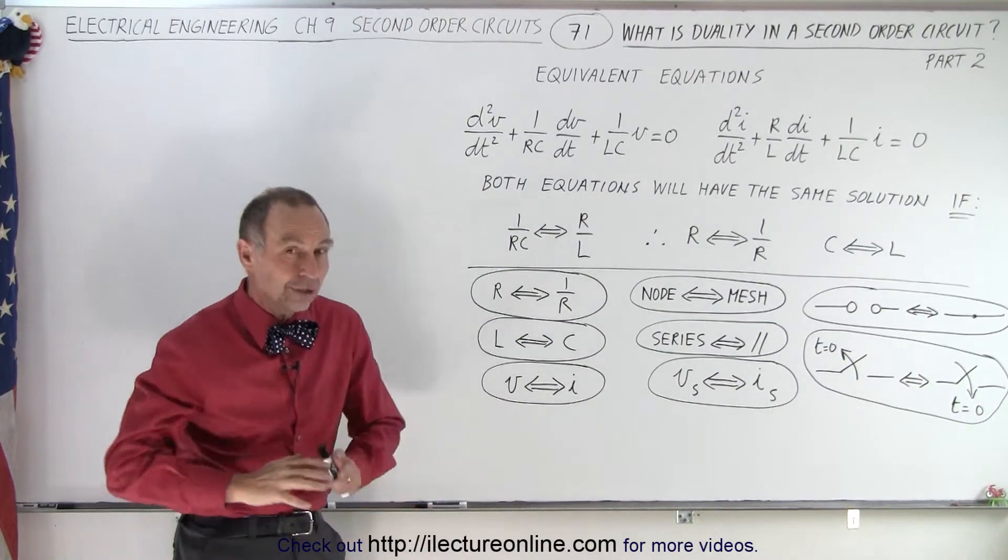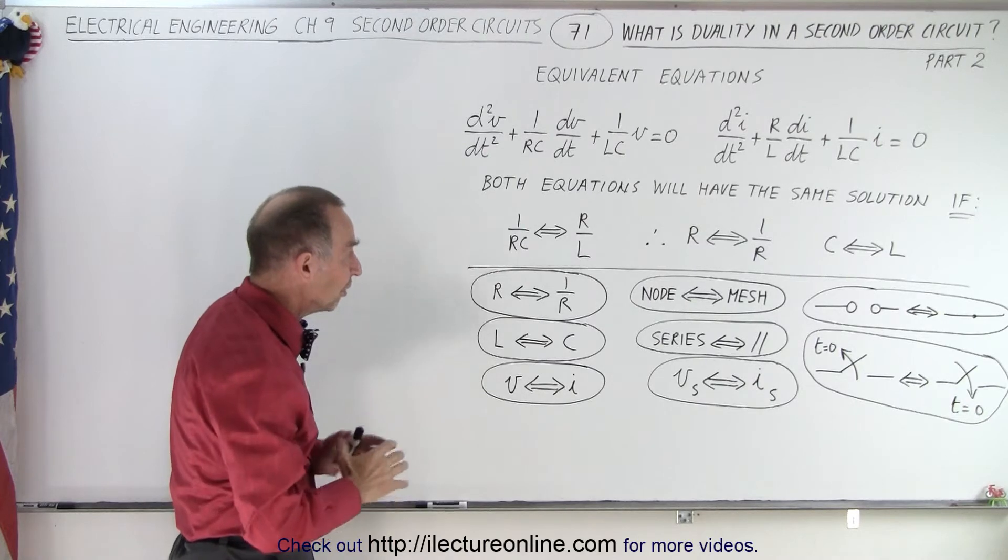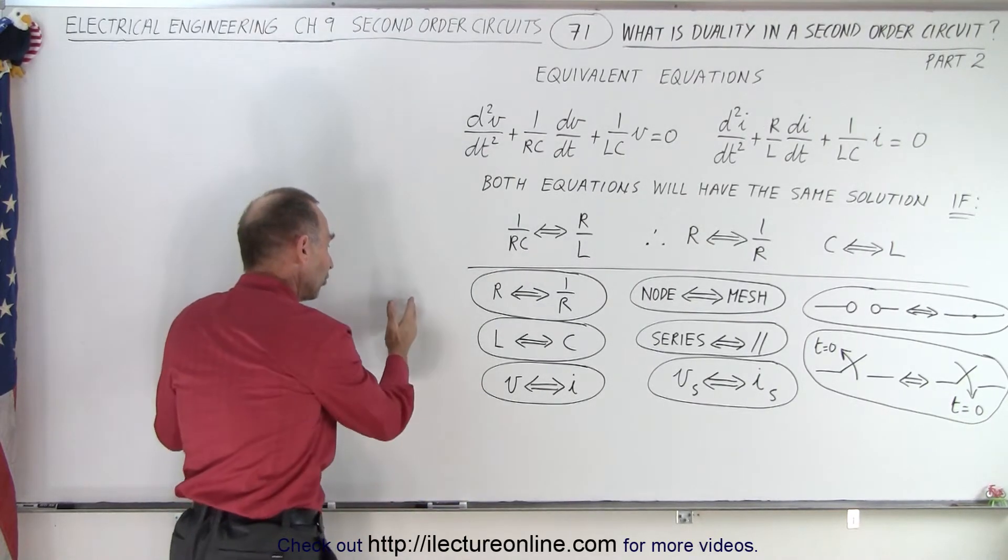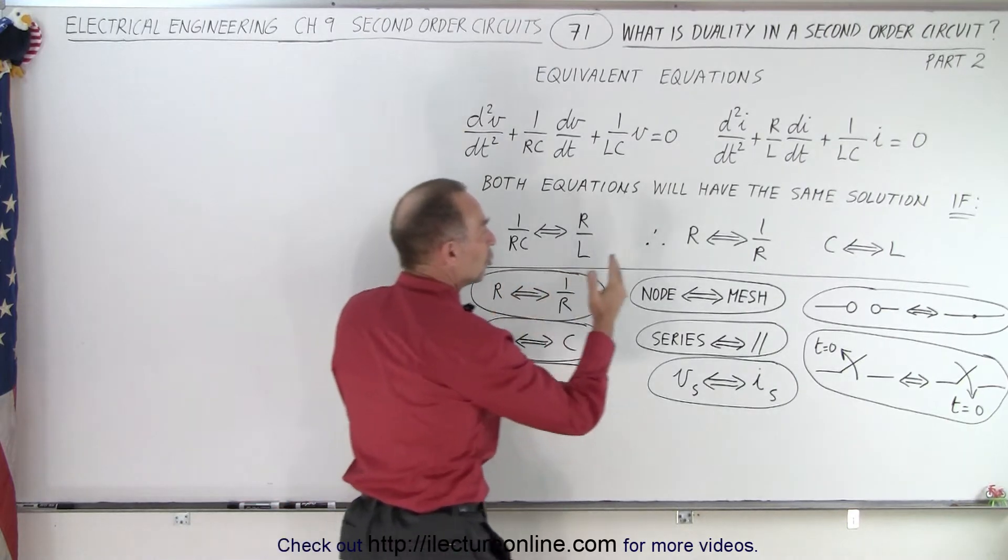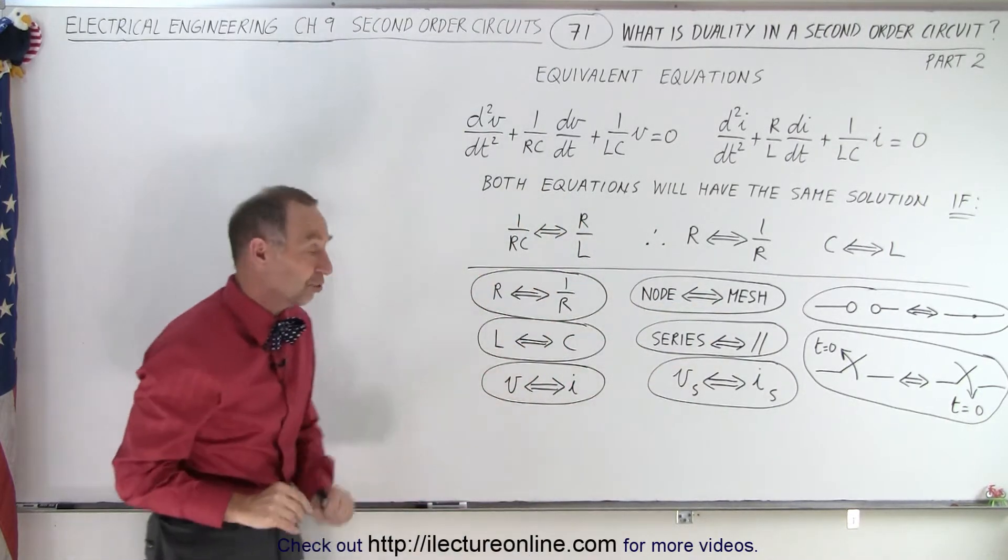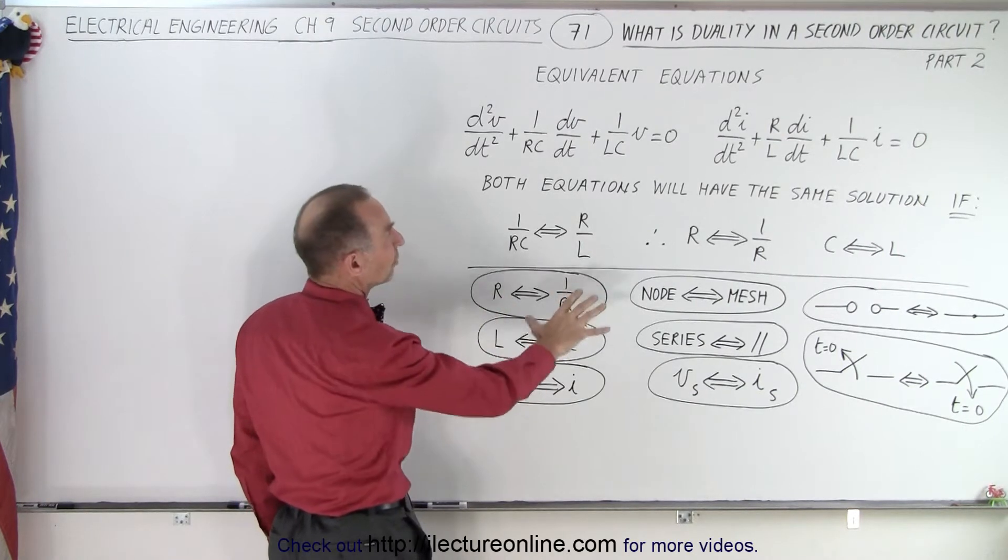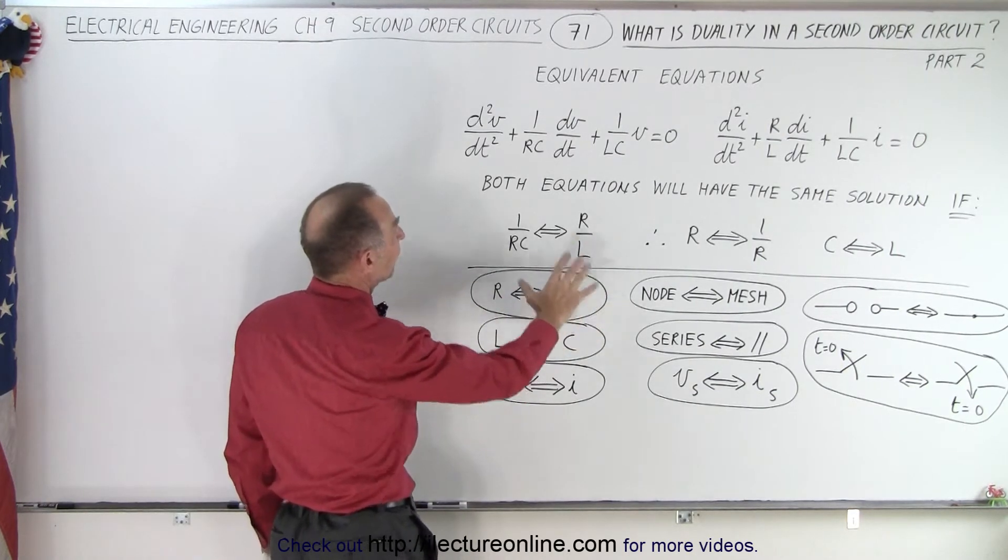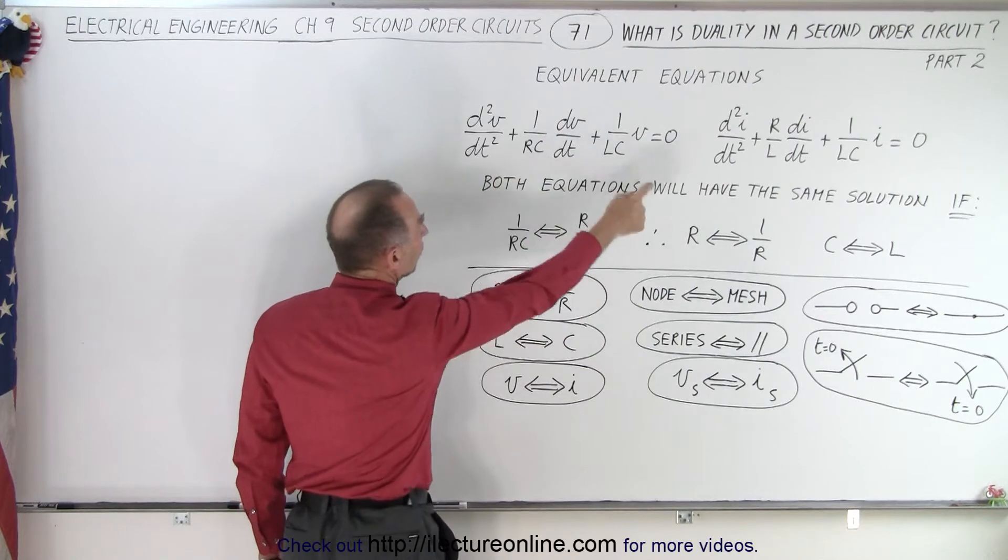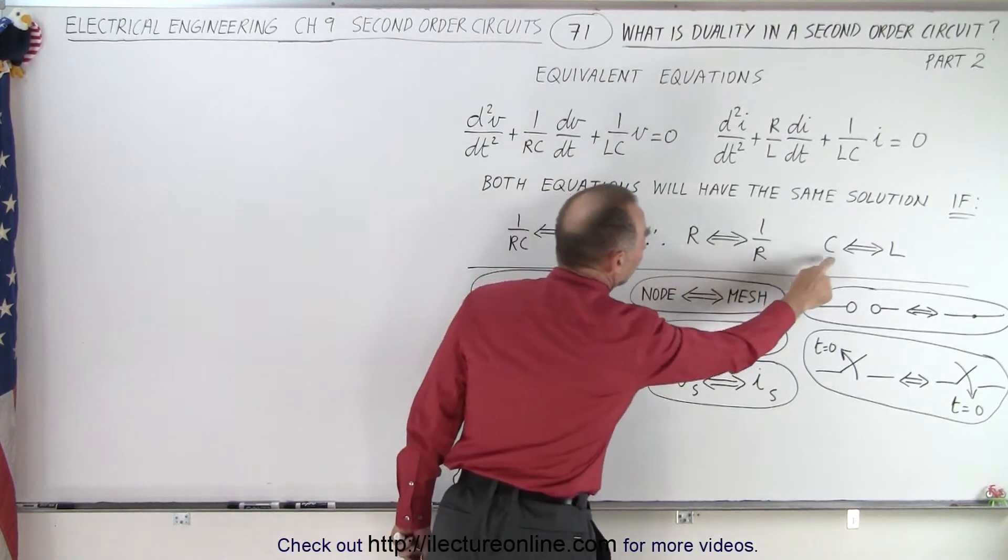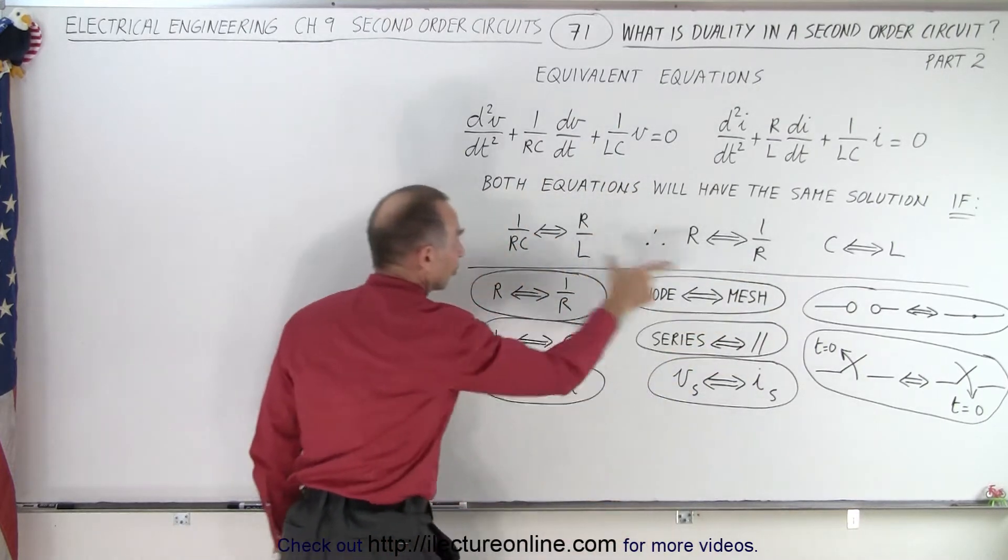Essentially, because there's other things inside circuits, this is what happens when we take the duality, when we get one circuit and we want to convert it into the duality circuit. This is what you must do. Again, as we mentioned before, if you make that equivalence, if this becomes equivalent to that, and this becomes equivalent to that,